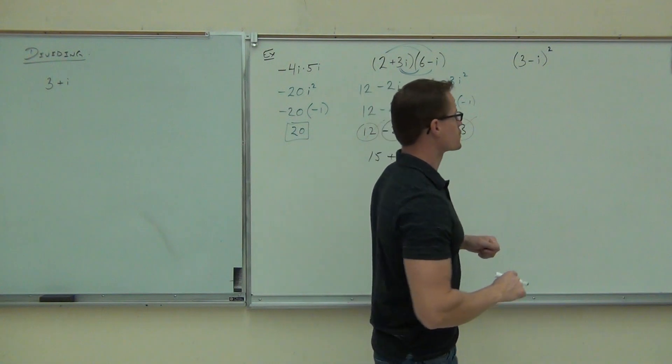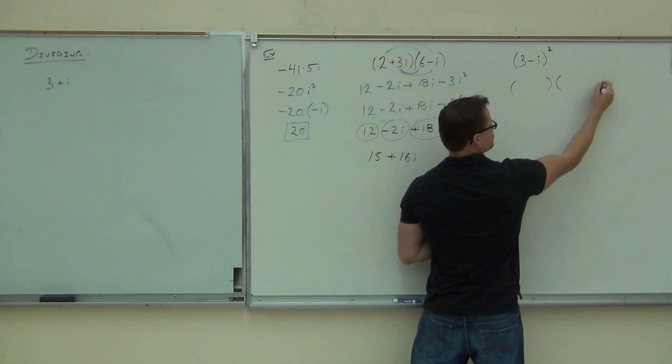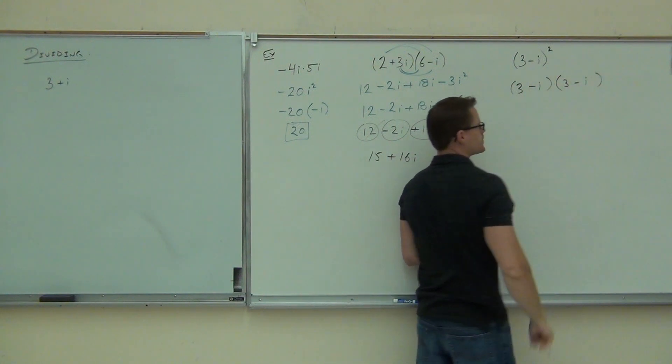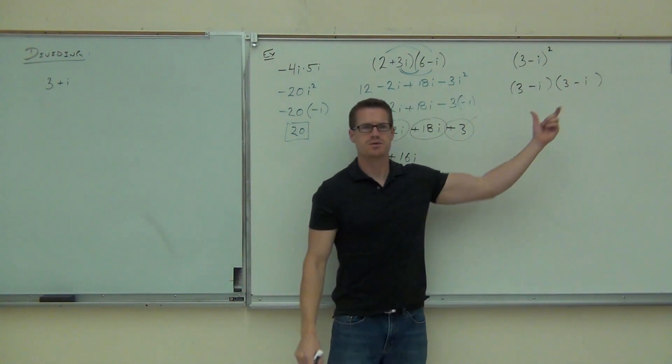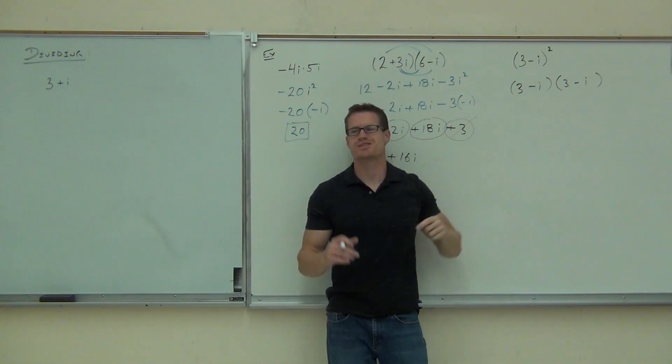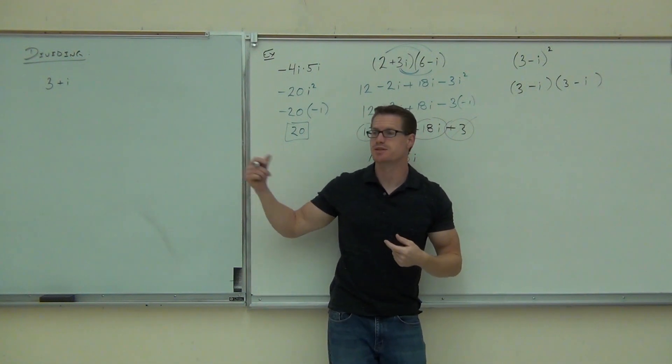Now, our last one. Of course, this really means 3 minus i times 3 minus i. Ladies and gentlemen, are these two things conjugates? No. Are the middle terms going to cross out? No. Now we have the same sign. The conjugates, those had different signs. That's where those middle terms were being eliminated.